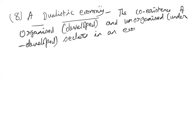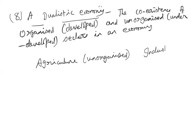The organized sector uses all modern methods of production, while the unorganized sector uses outdated and traditional methods. Agriculture generally comes under the unorganized category, while industry and services come under the organized sector. Whatever progress is made by the industry or service sector using modern methods is often nullified by the unorganized sector, especially agriculture, which plays a major role in countries like India.